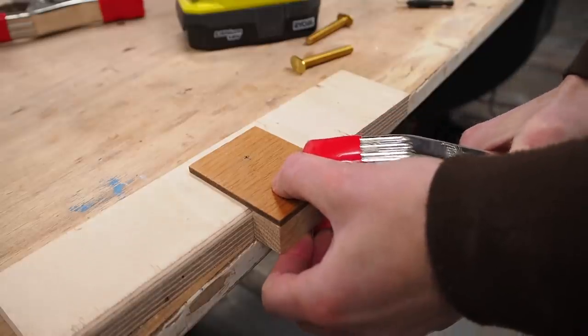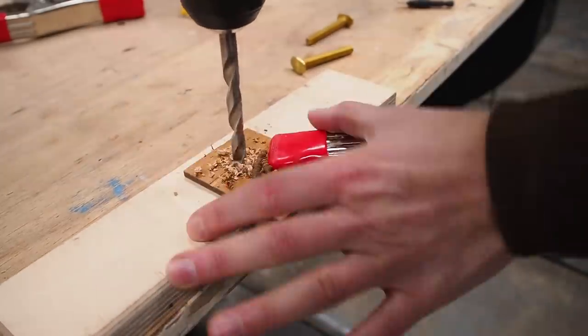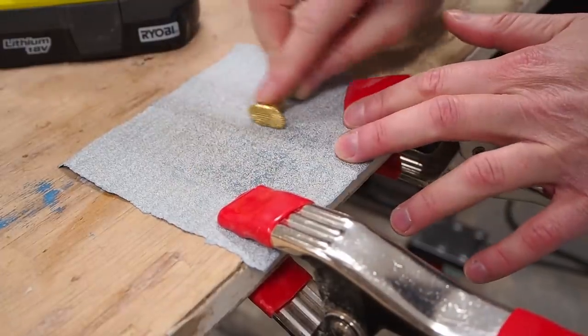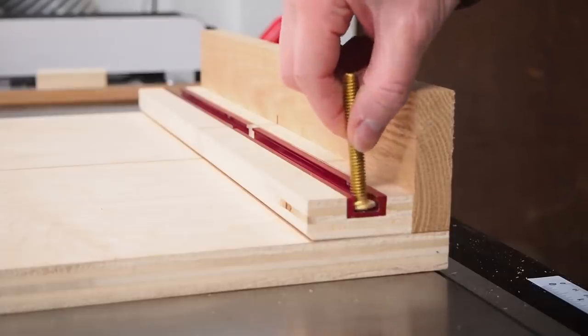Once it was dry I drilled a hole for the flange bolt using a backer to prevent tear out. I'm actually using toilet bolts but the heads are a little too wide so they need to be sanded or filed down just a bit in order to fit the t-track.